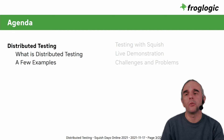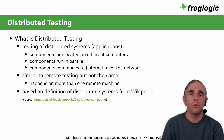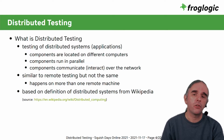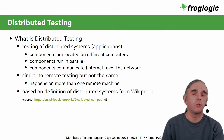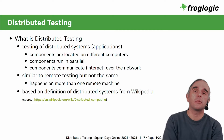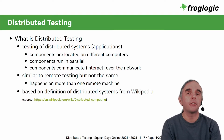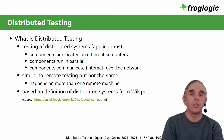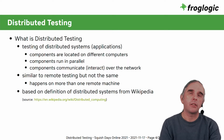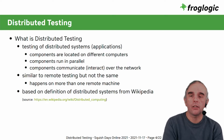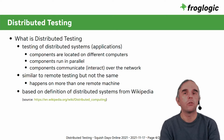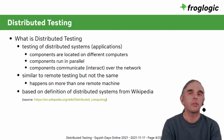Since this talk is aimed more at beginners, I'll first say a few things about distributed testing and show a few simple examples. There's no strict definition of distributed testing, but if you look at Wikipedia, you'll find the definition of distributed systems. Distributed testing in our context is the testing of applications running on distributed systems, where components run on different machines in parallel and communicate through the network. From a GUI point of view, you have several GUI applications running on different computers, all communicating through the network.